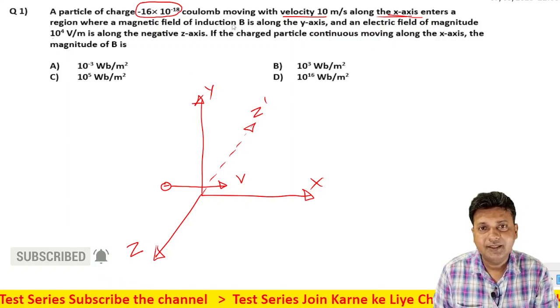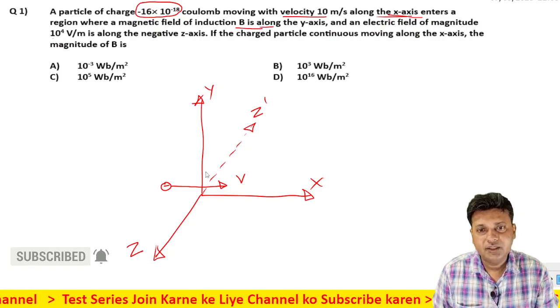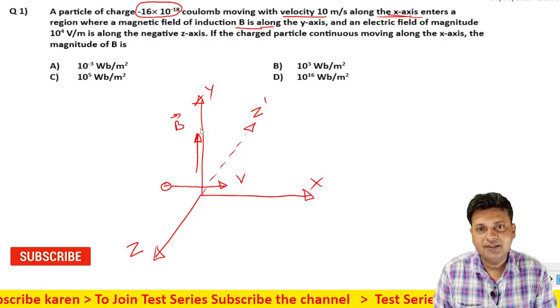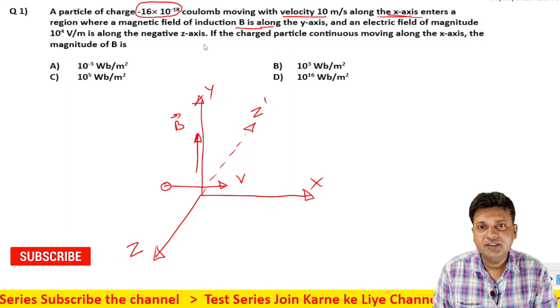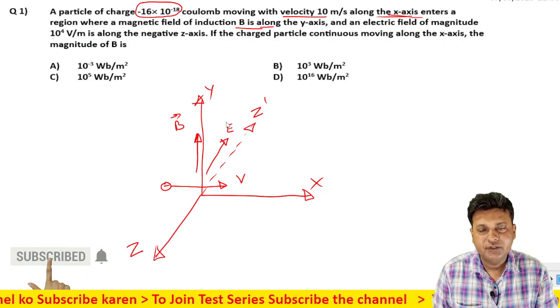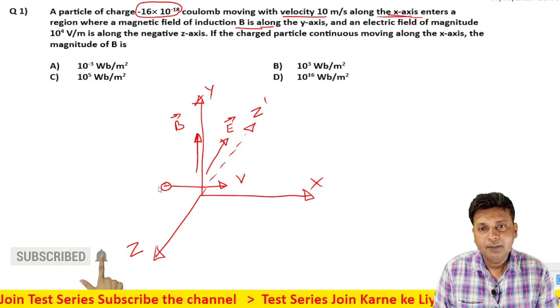The magnetic field is along the y-axis. The electric field direction is in the negative z direction. This is the electric field direction.